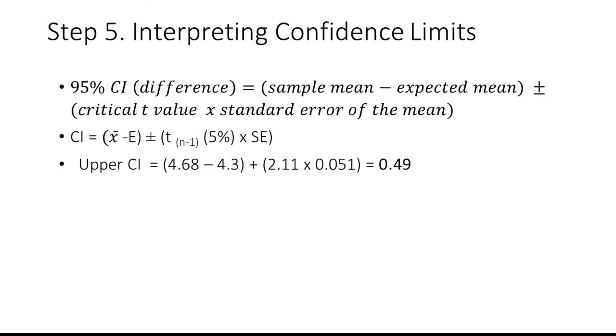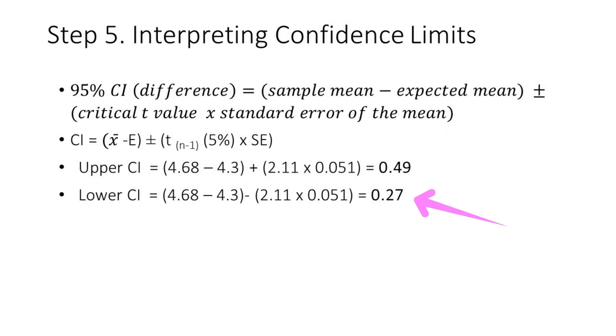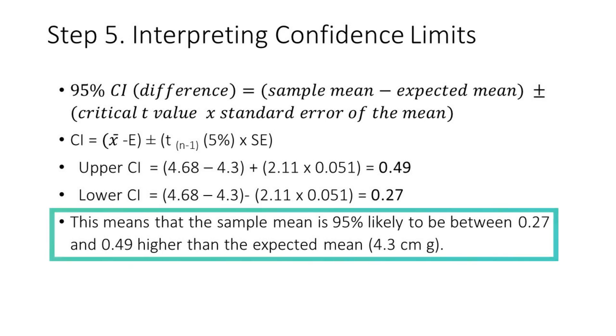By substituting the formula with the values that we have, our upper confidence interval is 0.49 and the lower confidence interval is 0.27. This means that the sample mean is 95% likely to be between 0.27 and 0.49 higher than the expected mean which is 4.3 cm.